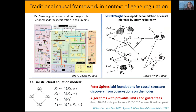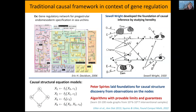Going back to perturbations and how we generally think about predicting the effect of a genetic intervention — we often think of it in terms of gene regulatory networks, where this is the gold standard: coming up with gene regulatory networks with differential equations and all these edges that tell us exactly what happens downstream if you perturb something. The standard framework from causality was developed by Sewall Wright: causal structural equation models that can reason through what actually happens downstream if you intervene on a particular node.